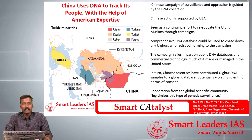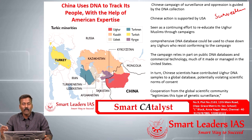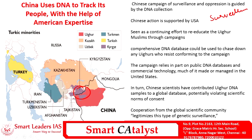We are all aware that China is doing a social surveillance project where the social actions of citizens are ranked, and based on those rankings, their public facilities are offered. In a similar line, they are also implementing surveillance programs over Uighur Muslims. Uighur Muslims belong to the Kashgar region along the north-western part of China.